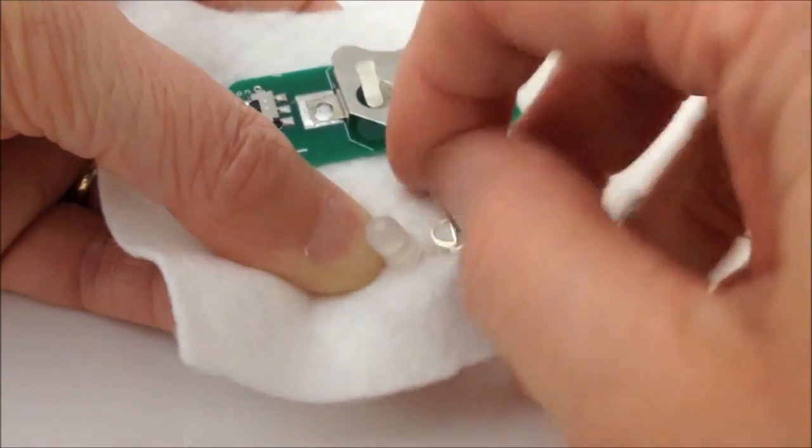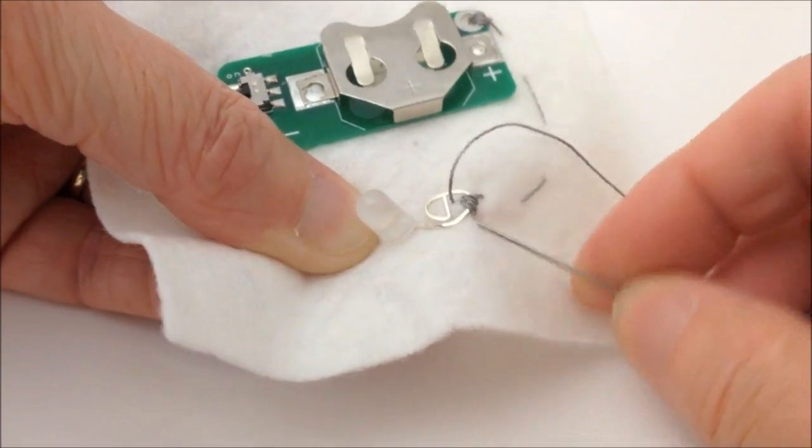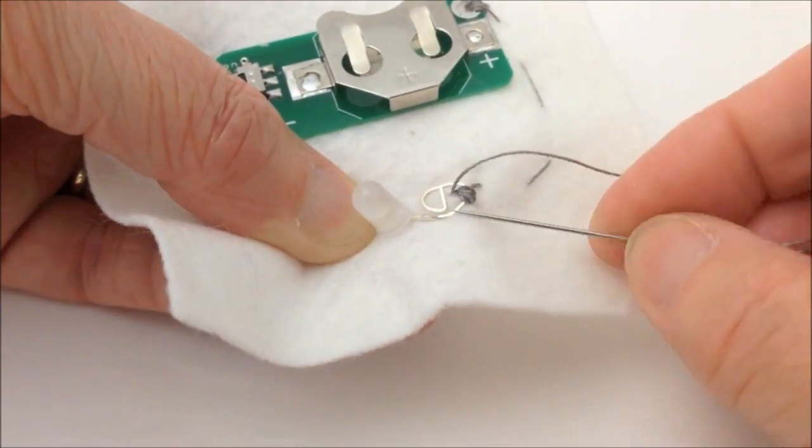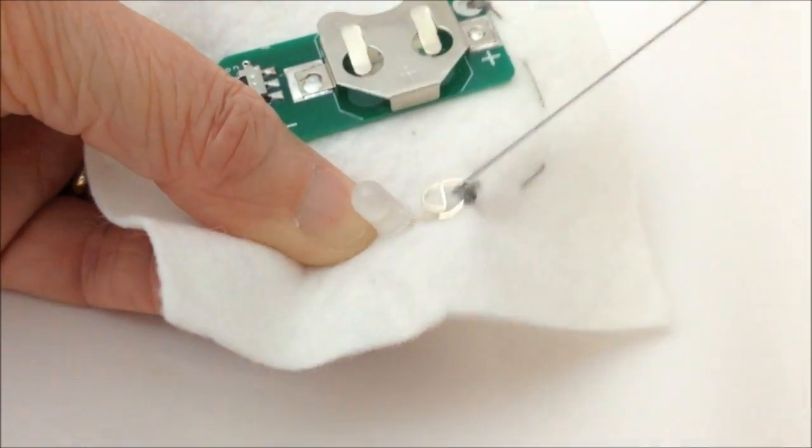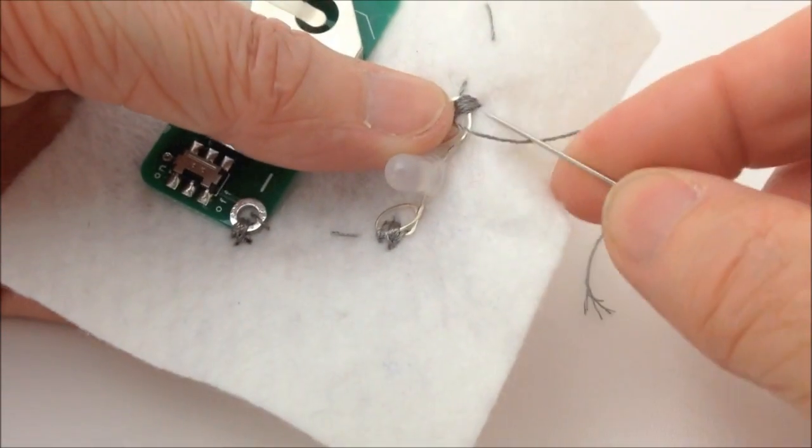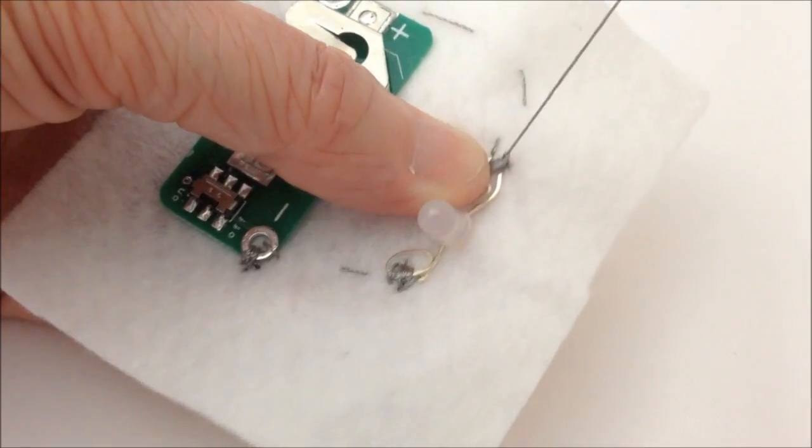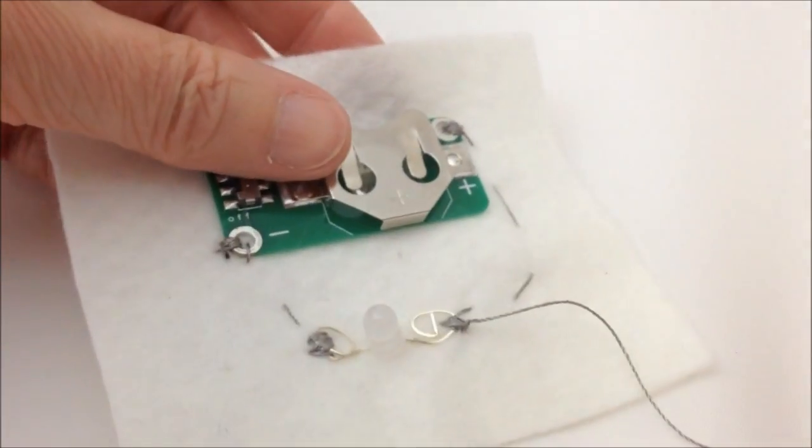Again, same rules, making sure you pull your thread nice and tight right after each stitch, and making sure there's no loose threads. Just taking the needle into the side of the stitch just at the end just to produce a small knot.